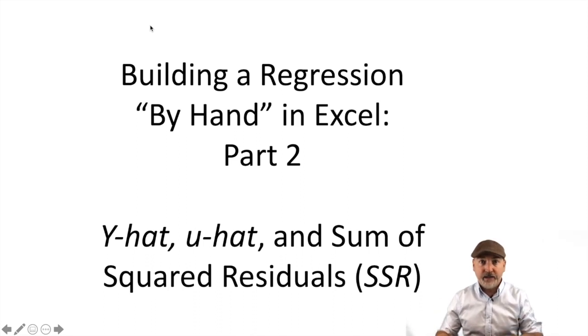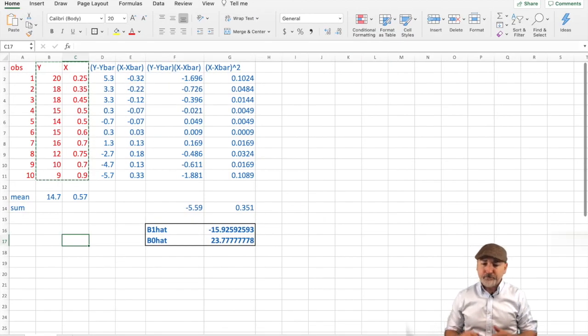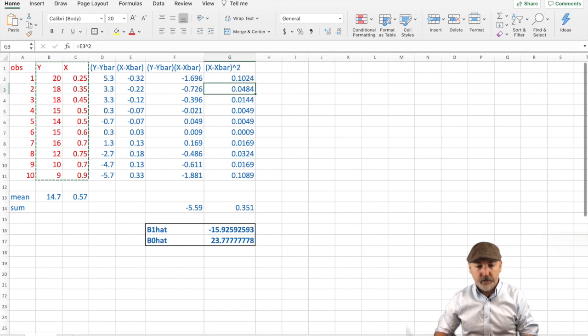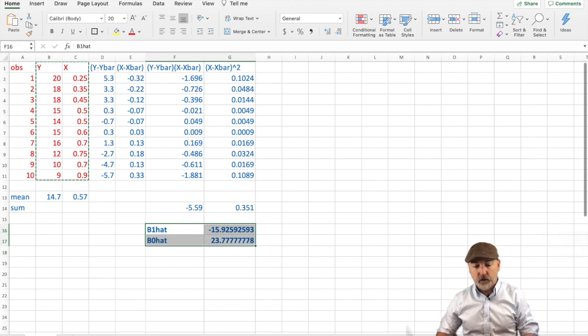Before we jump into that, let's remind ourselves where we left off. In Excel, what you see here in red is going to be the raw data. Those first three columns is what we started with, and from there we generated all the information we need, the deviations from the mean, the shared deviations, and the squared deviations for our x and our y variable.